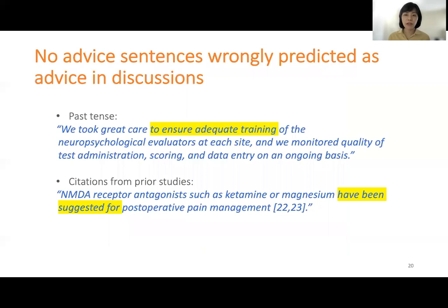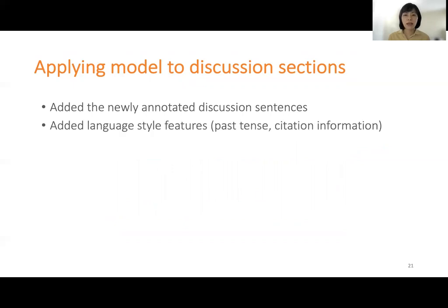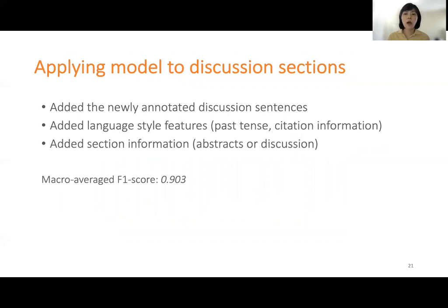When looking at misclassified sentences in discussions, the no-advice sentences were very similar to advice ones, having linguistic cues of either weak or strong advice. However, these no-advice sentences were normally in past tense, describing study processes or results, or citing recommendations from prior studies — which was not advice by our definition. To improve performance, we added the annotated discussion sentences to our BioBERT model trained on structured abstracts, and added language style features and section information to each sentence. After these steps, our model generalizes well to discussion sections for health advice detection.